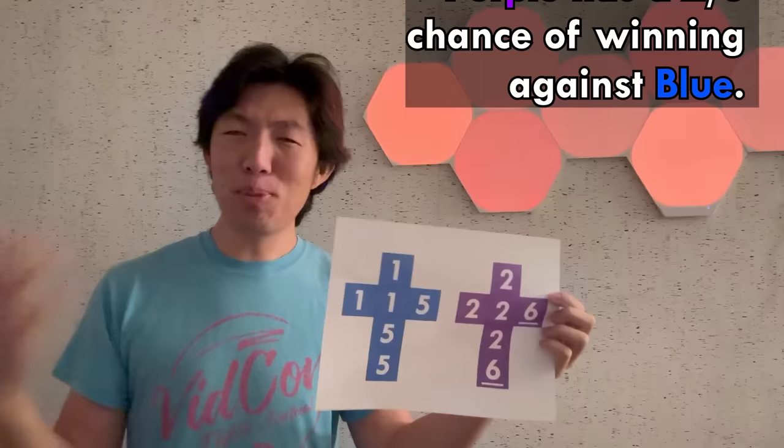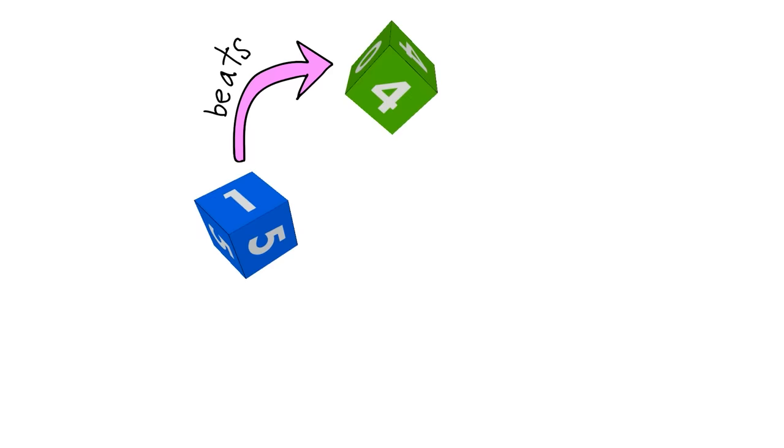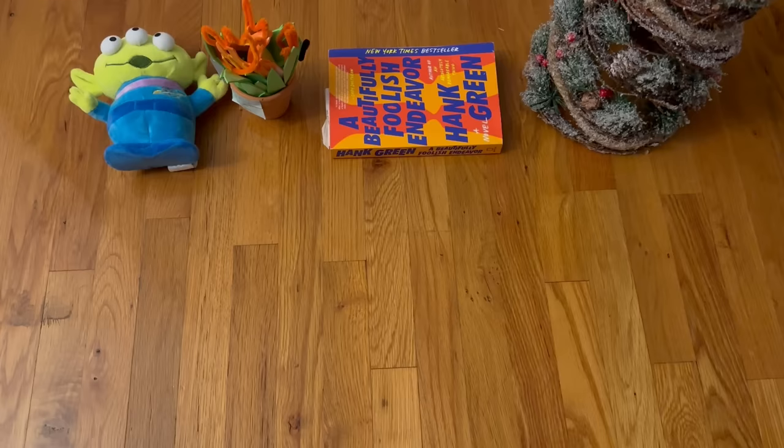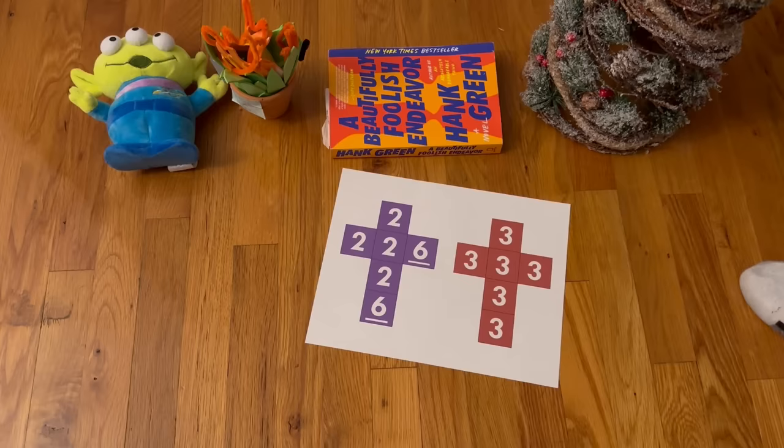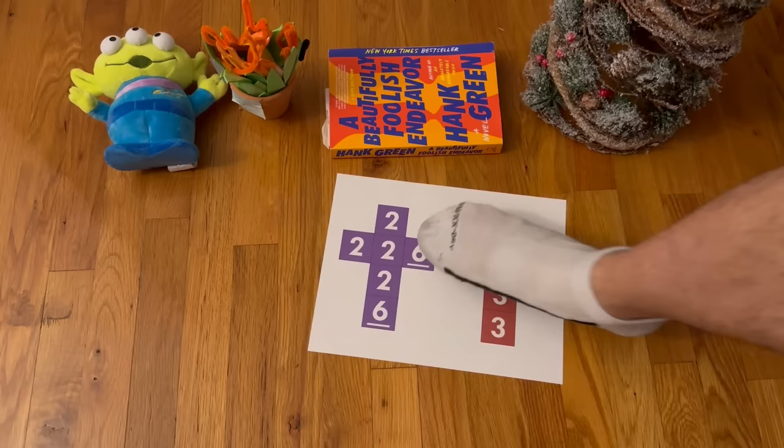And that means that purple beats blue. Next, let's take a look at purple versus red. This one is an easy one because red always rolls a 3. So to beat that, purple just needs to roll higher than a 3, which unfortunately only happens 2 out of 6 times. And that means that red beats purple.